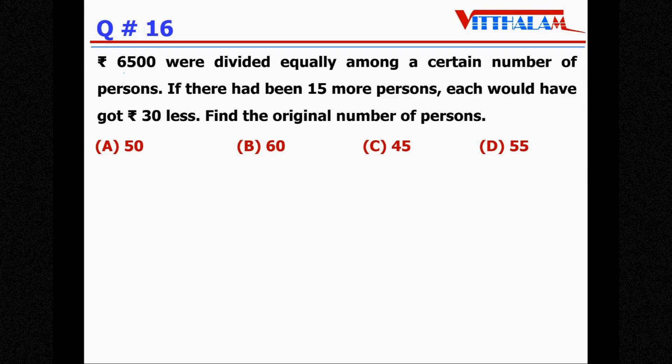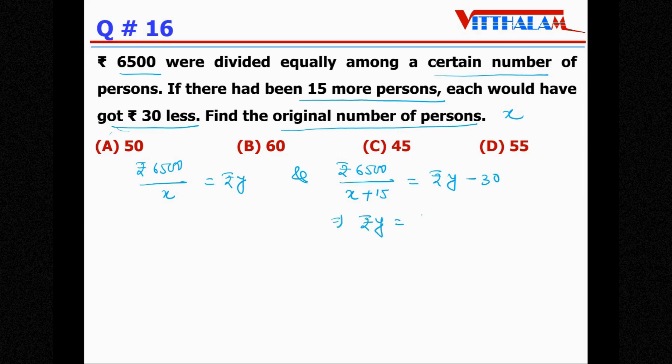Rupees 6500 were divided equally among a certain number of persons. If there had been 15 more persons, each would have got rupees 30 less. Find the original number of persons. Let's say the original number of persons is x. So rupees 6500 divided by x, everybody will get rupees y. And rupees 6500 divided by x + 15, everybody will get rupees y - 30. Therefore, y = 6500/(x+15) + 30.